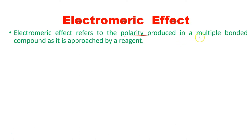In the electromeric effect, polarity is produced due to a multiple-bonded compound when it is approached by a reagent. As such, the compound does not have polarity, but when it is approached by any reagent, it produces polarity.